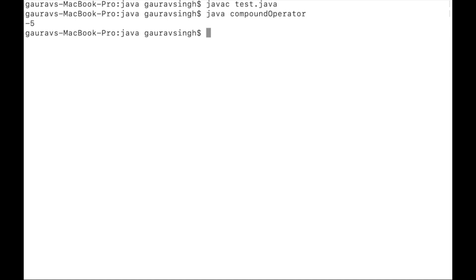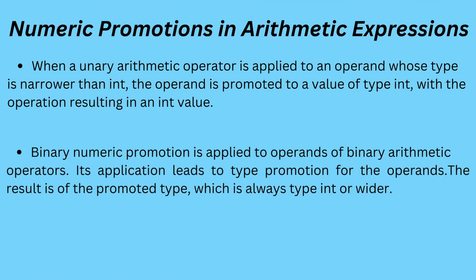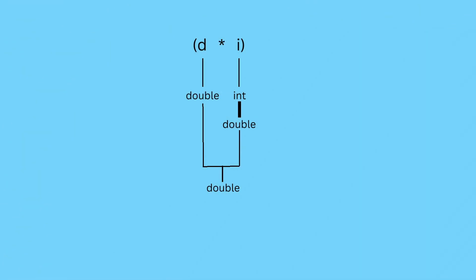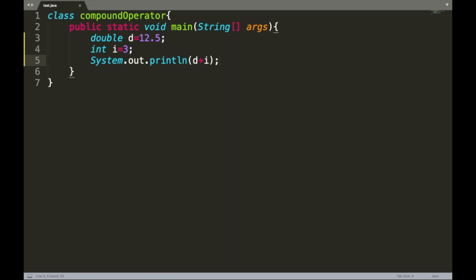The second rule: binary numeric promotion is applied to the operands of binary arithmetic operators, leading to type promotion of the operands, with the result usually being of type int or wider. Consider the expression d multiplied by i, where d is double and i is int. The operand of the lower type (int) is converted to the larger type (double), so the output will be double.